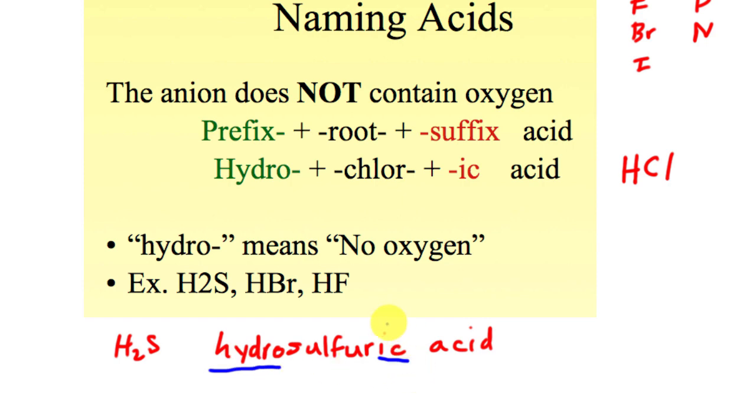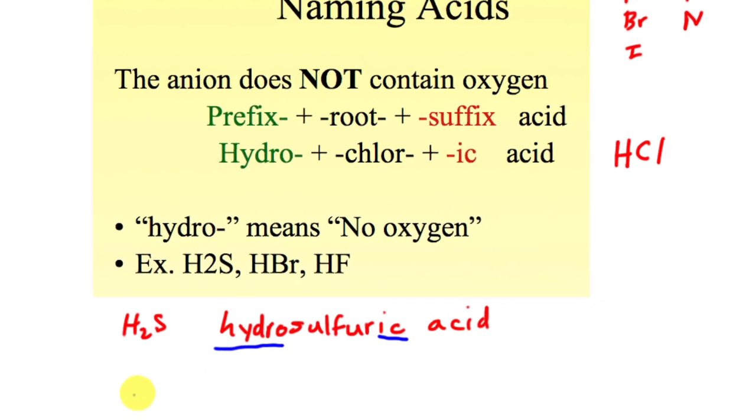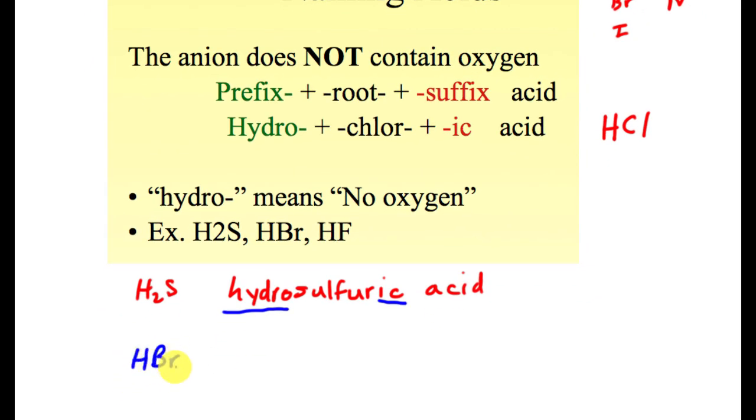If I were looking at HBr, again no oxygen in the name, so I would do hydro as the prefix. Then I would do the brom—and this is one that actually has the root part of it, the -ene is taken off—so hydrobromic acid. Notice the pattern: pattern is prefix hydro, -ic, and brom.